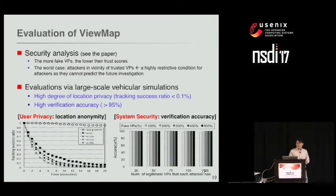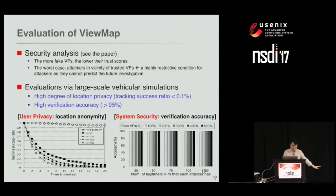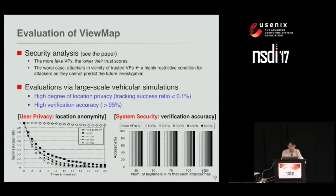We evaluated both verification performance and user location privacy. In the left graph, the x-axis is driving time and the y-axis is tracking success ratio. As driving time increases, the system's tracking success ratio decreases to below 0.1, demonstrating strong privacy protection. In the right graph, verification accuracy is almost always above 95%.